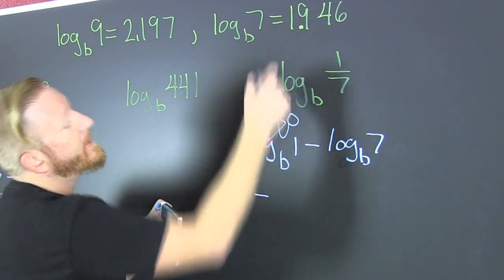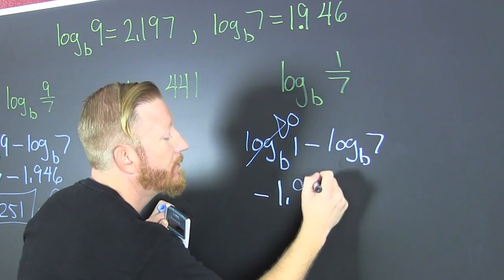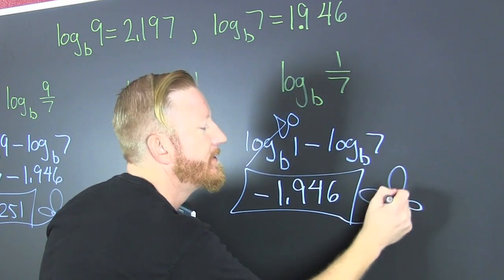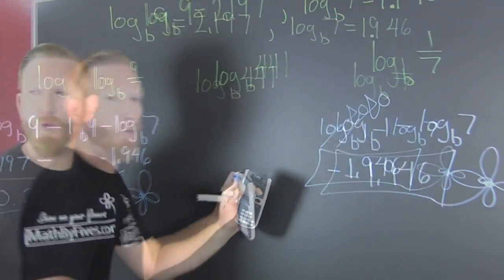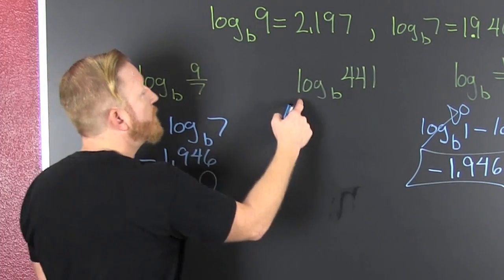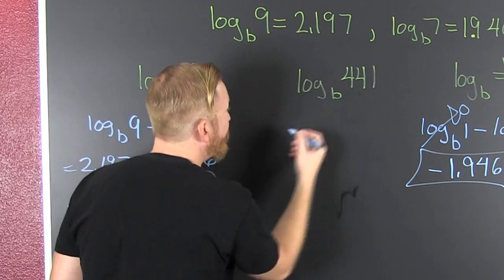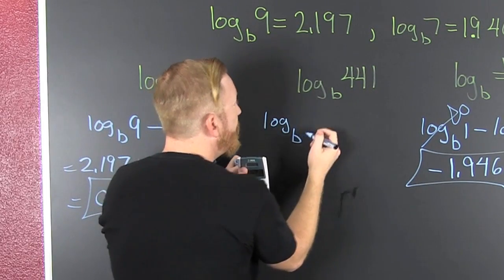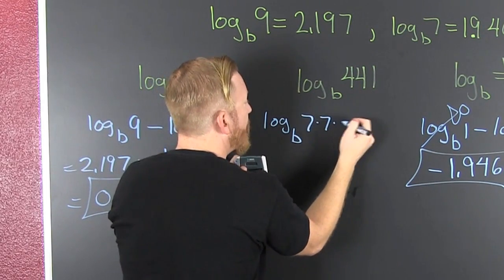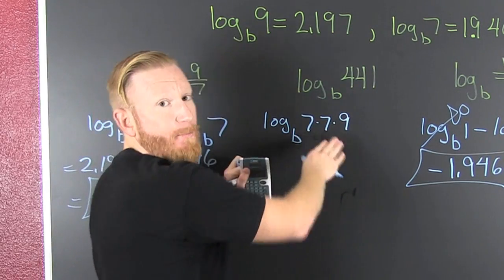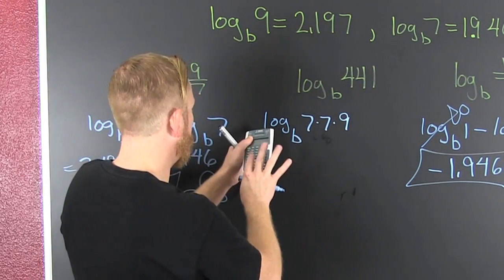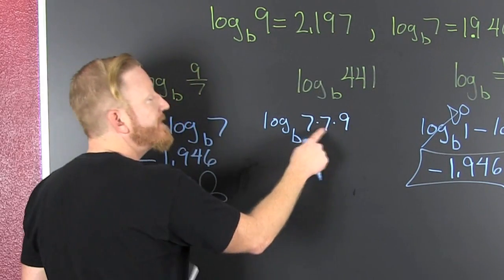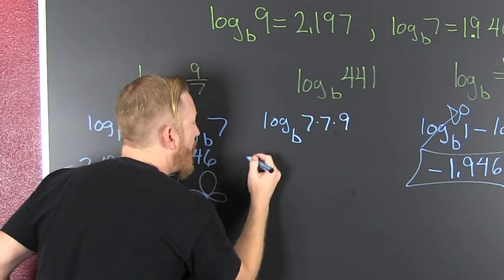1.946 is it! Done! Here! We have to break it up into its factors! That's log base b of 7 times 7 times 9. Don't believe me! Check it! It works out! Then, the log of a product is the sum of the logs.